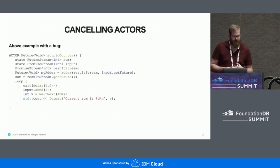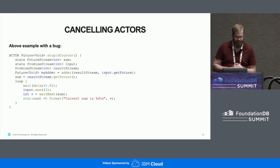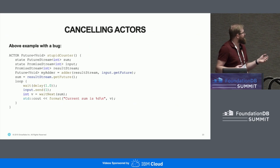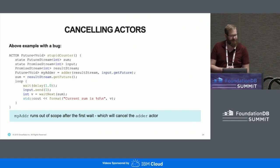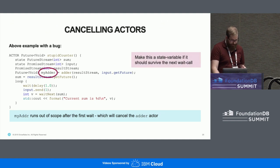Another thing: whenever the future count of an actor goes to zero, it will get canceled and stop working. In this counter example with an introduced bug, we create the adder actor but it runs out of scope as soon as we call into wait, and therefore gets canceled because we didn't pass the future to any other location. So this future has to be a state variable so it can survive the wait call.